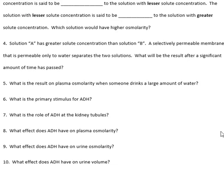When we do the endocrine system, we'll talk about various hormones. But in this lab we're going to talk about anti-diuretic hormone, or ADH for short. Most people know what a diuretic is — something that makes you pee. One of the most common diuretics is caffeine: you drink some caffeine and pretty soon you have to go to the bathroom because it causes you to put more fluid in your bladder.